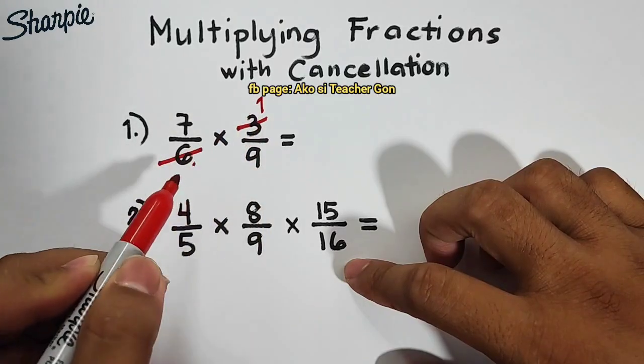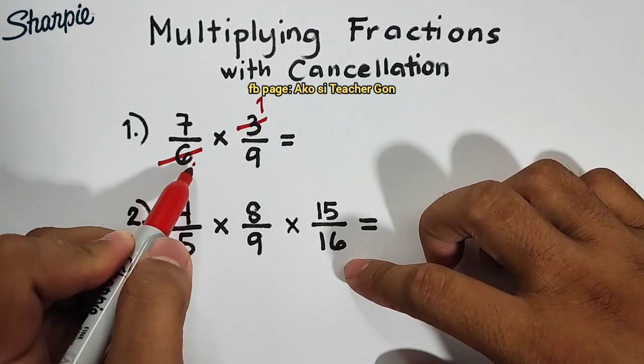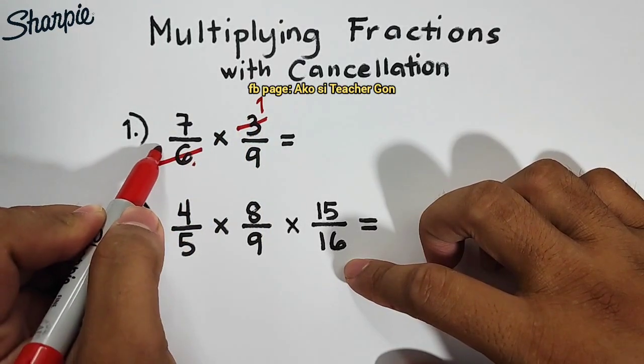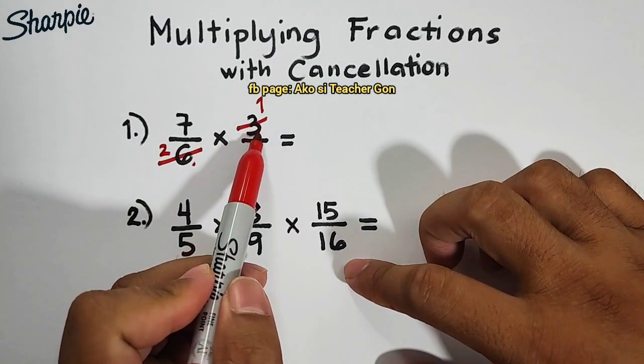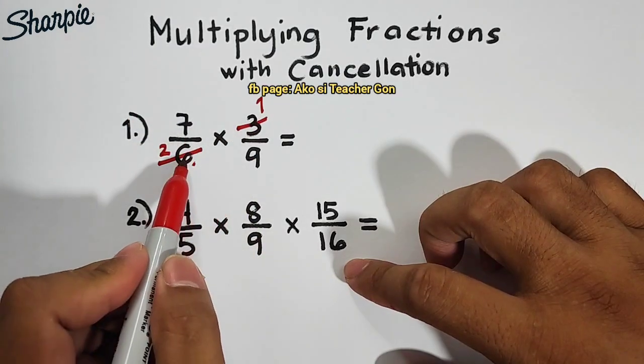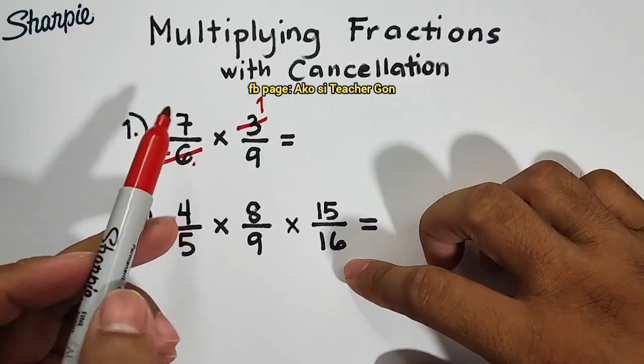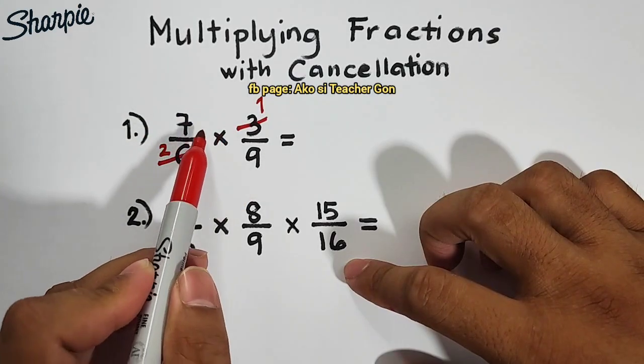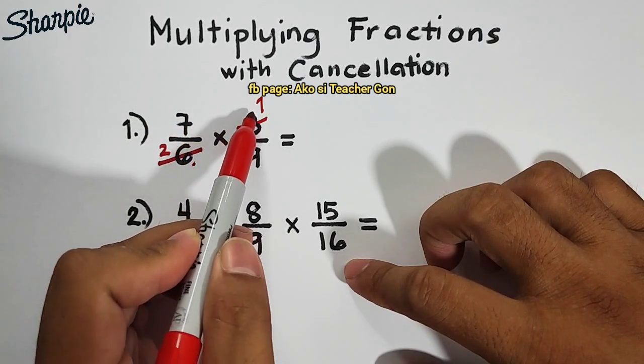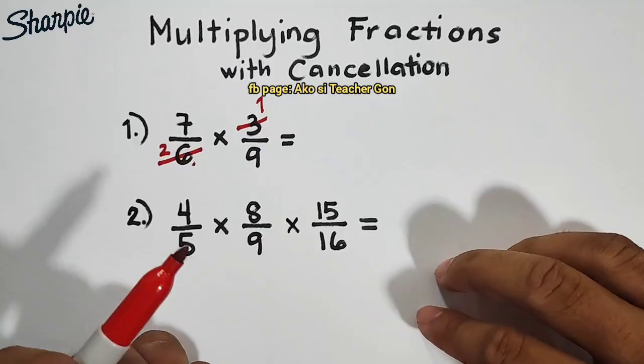And then, when we divide 6 by 3, that is equal to 2. Or, in other words, there's one 3 in 3, and there are two 3's in 6. So, observing the numbers, as you can see, we have 7, 1, 2, and 9. And we can't cancel anything else. So, we will proceed with multiplication.